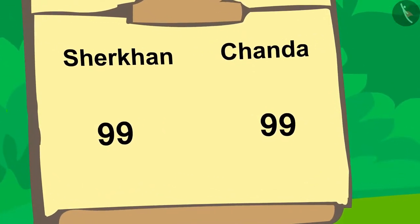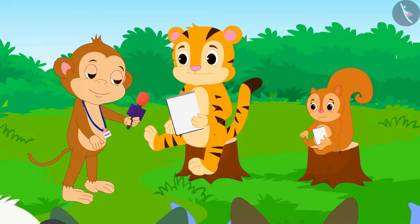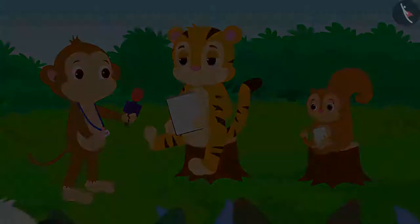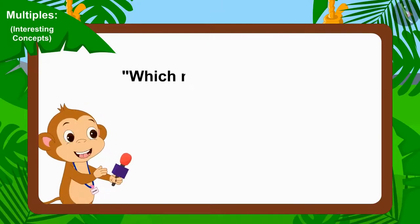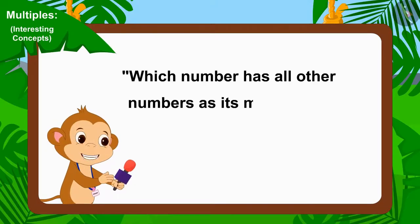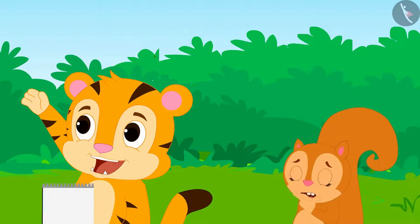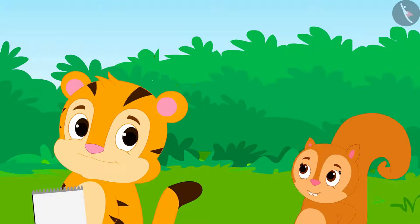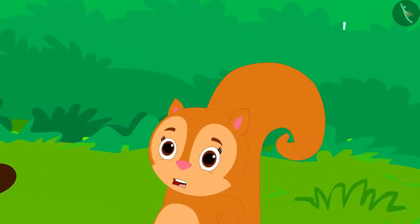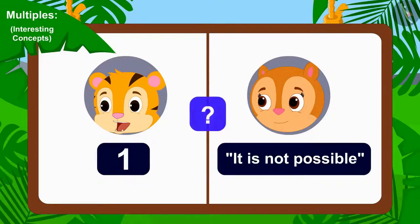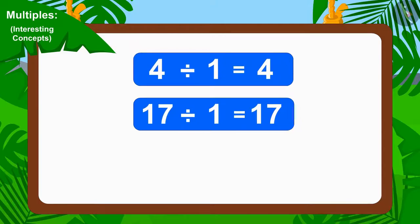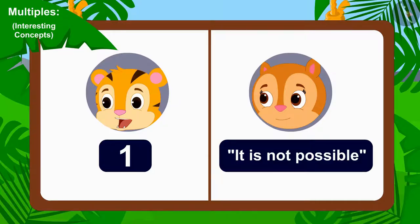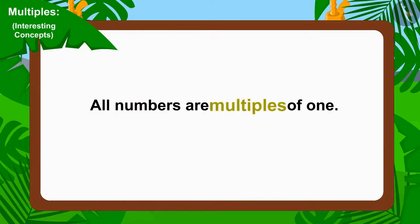Once again the scores are equal. The last question of the competition is: which number has all other numbers as its multiples? Shir Khan immediately replied 'one,' and Chanda replied it is not possible — there is no such number. Children, can you tell whose answer is correct? We can divide any number by one, therefore all numbers are multiples of one. Shir Khan's answer is absolutely correct!